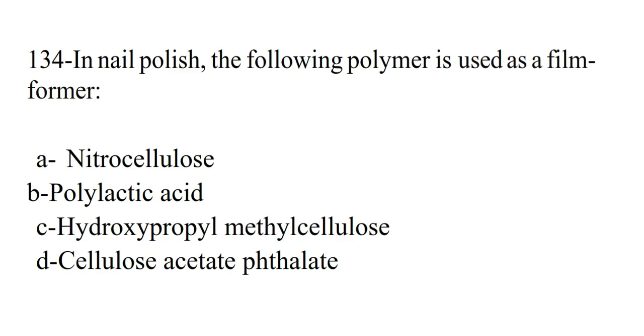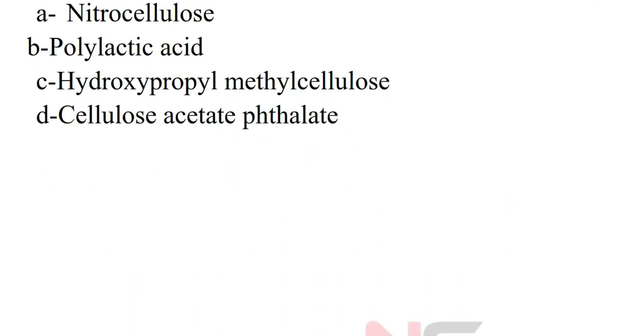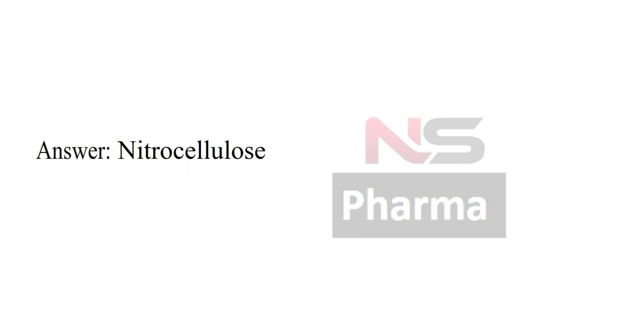Next question. In nail polish, the following polymer is used as a film former: Option A Nitrocellulose, Option B Polylactic acid, Option C Hydroxypropyl methylcellulose, Option D Cellulose acetate phthalate. Answer: Nitrocellulose.